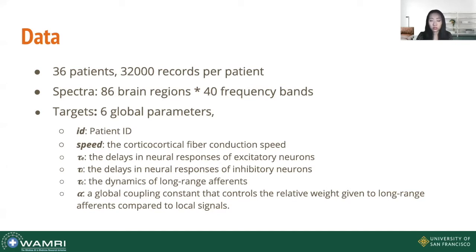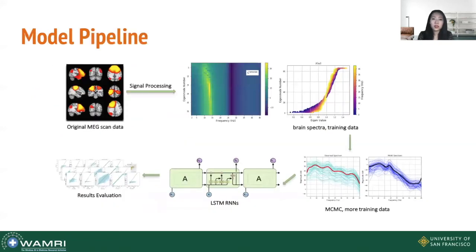Also, tau_c is a global coupling constant that controls the relative weight given to long-range inference compared to local signals. Here is the model pipeline. As shown in the picture, our architecture is made up of several sequential parts, including source signal preprocessing, MCMC simulation, and LSTM modeling.